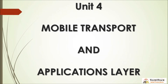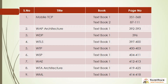Unit 4: Mobile Transport and Applications Layer. There are nine topics in this unit. Mobile TCP — Textbook 1 pages 351 to 368, Textbook 2 pages 87 to 111. WAP Architecture — Textbook 1 pages 392 to 393. WDP — page 396. WTLS — pages 397 to 400. WTP — pages 400 to 403. WSP — pages 404 to 411. WAE — pages 412 to 413. WTA Architecture — pages 419 to 425. WML — pages 414 to 418.